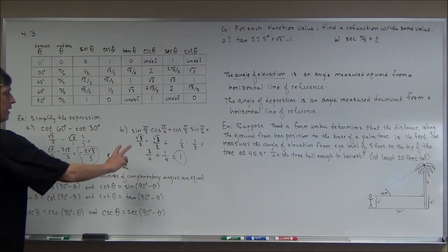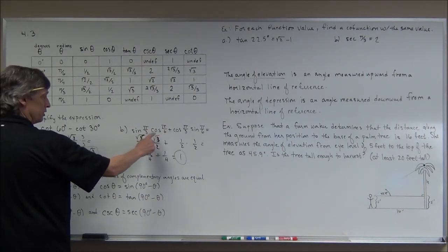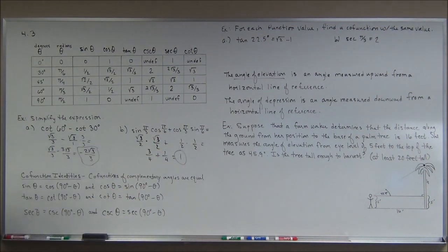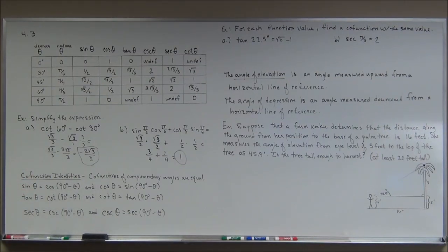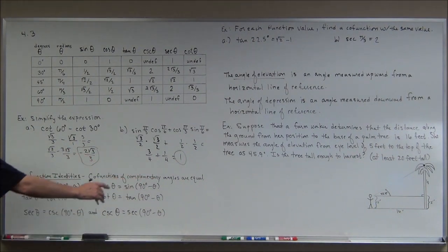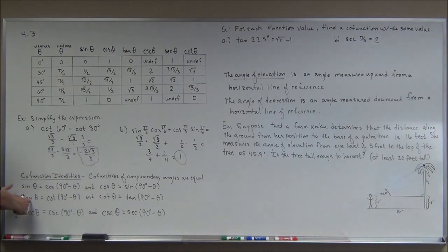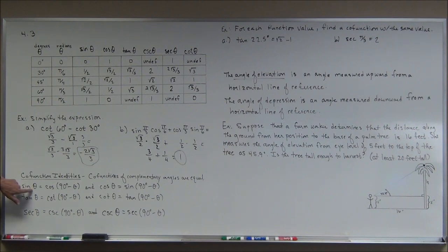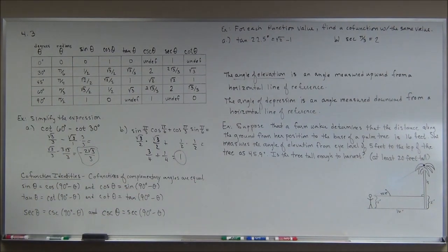As that example shows, complementary angles like 60° and 30° (or π/3 and π/6) have equal sine and cosine values. Sine and cosine are co-functional trig functions. The co-function identity states: sine of an angle equals cosine of its complement (90° − θ), cosine equals sine of the complement, and the same applies for tangent/cotangent and secant/cosecant.